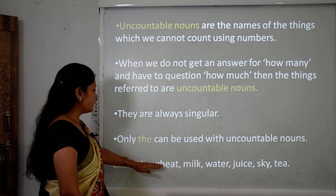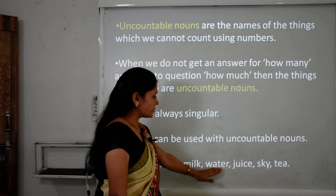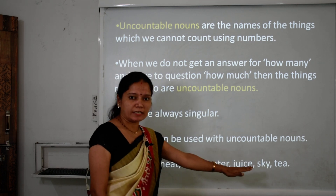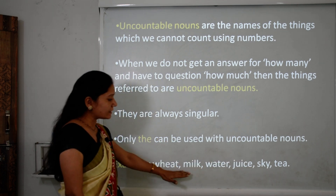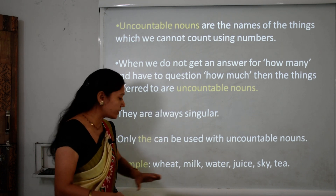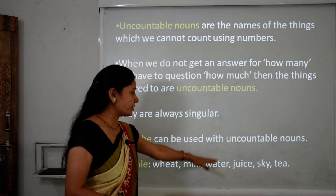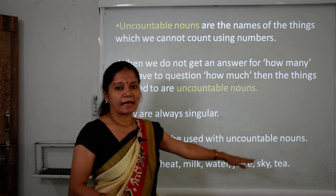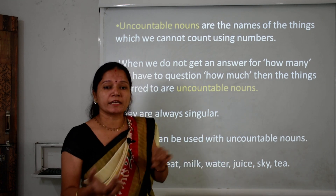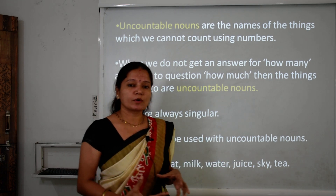Examples of uncountable nouns are: wheat, milk, water, juice, sky, and tea. We cannot count these. We cannot say 'waters' or 'teas' — they do not have plural forms.